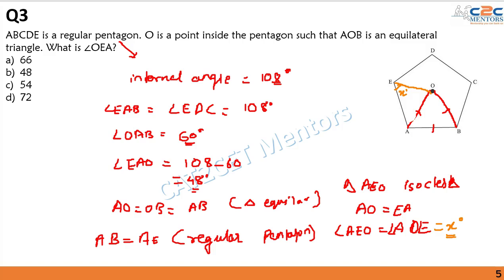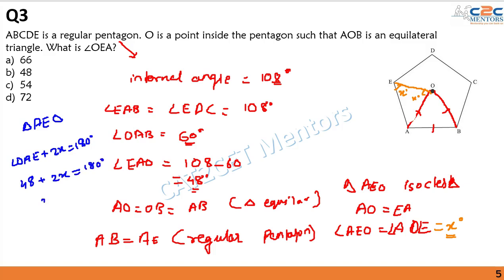Since triangle AEO is isosceles with AO = AE, angles AEO and AOE are equal — let each be x degrees. In triangle AEO: angle OAE + 2x = 180°, so 48 + 2x = 180°, giving 2x = 132° and x = 66°. Therefore angle OEA = 66°, which is option A.